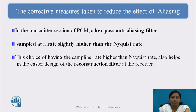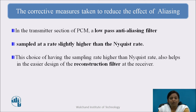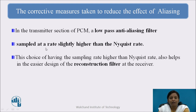The corrective measures taken to reduce the effect of aliasing: in the transmitter section of PCM, a low-pass anti-aliasing filter is used before the sampler, which eliminates the higher frequency components. Additionally, the signal can be sampled at a rate slightly higher than the Nyquist rate. This choice of sampling rate higher than the Nyquist rate also helps in the easier design of a reconstruction filter at the receiver.